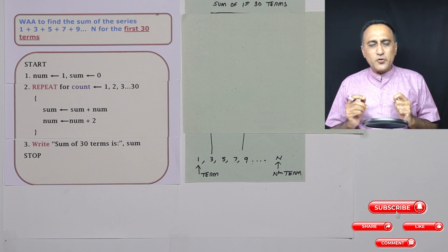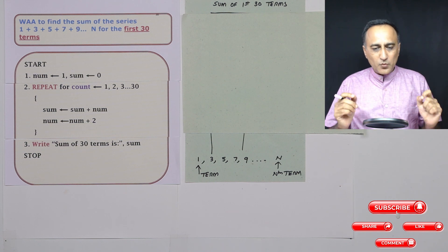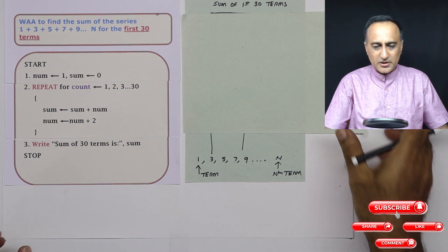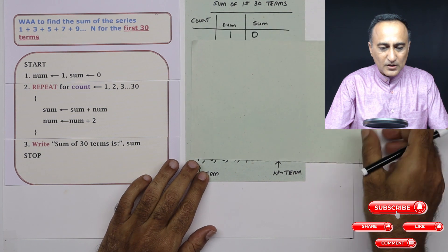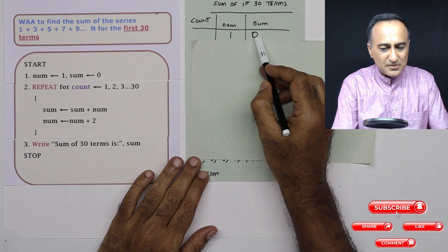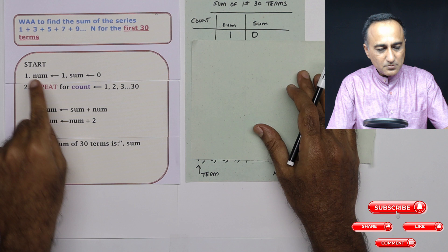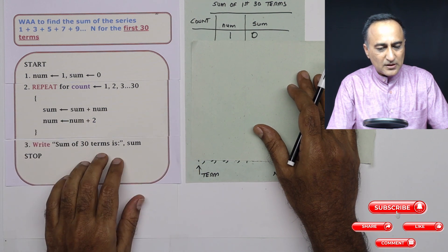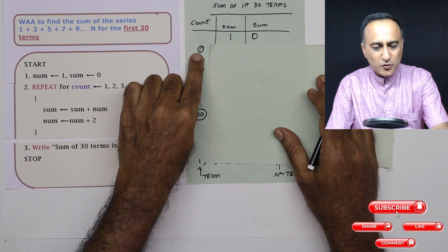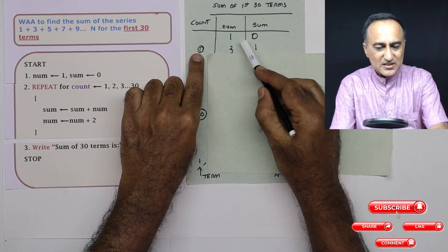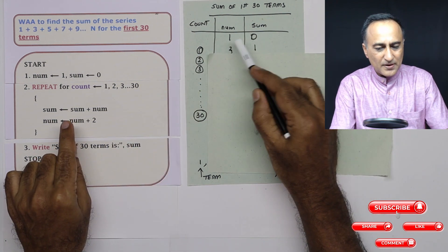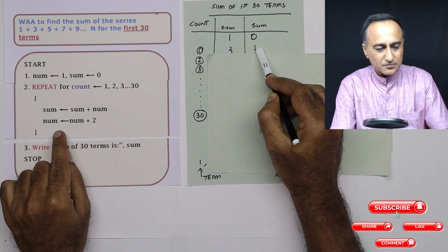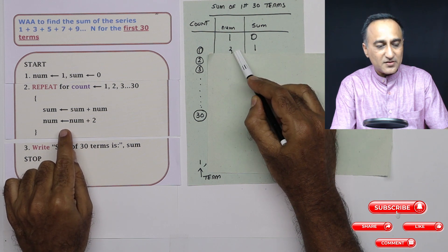So this should give you the sum of the first 30 terms. Now what we are going to do here is we are going to test this logic. Number is 1, sum is 0. Step number 1, here on the left side I have shown you count. So when count is 1, sum is 0 plus 1, it is 1. Number becomes 3.